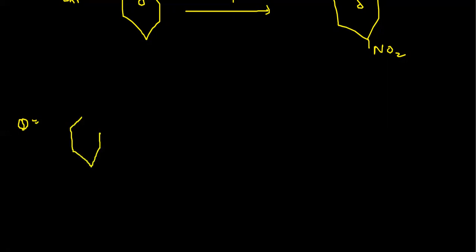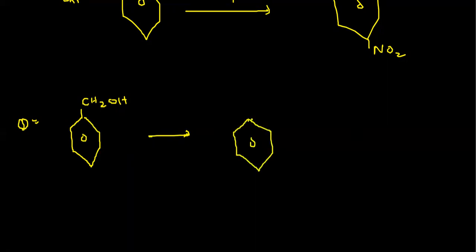Now suppose you have benzyl alcohol — CH₂OH over benzene. From this benzyl alcohol you want to make 2-phenylethanoic acid. Aliphatic is given preference over phenyl, so the phenyl is at position 2 — it would be 2-phenylethanoic acid with structure CH₂COOH. So how can we make this? CH₂OH needs to give CH₂COOH.